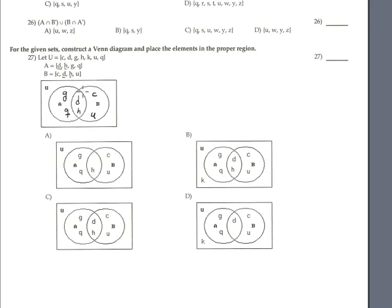Wait — we have more elements. In the universal set we have C, D, G, H, K, U and Q. K is not inside any set, therefore K is placed outside. Comparing with the options, the correct answer is obviously option B.